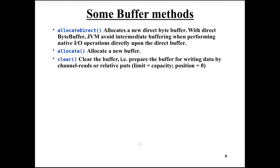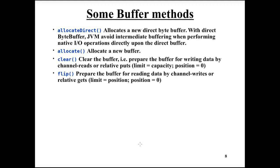The clear method empties the buffer. Say we have written data into the buffer, read all that data, and now want to write again. Clear sets limit to capacity — allowing all positions to be used — and sets position to zero, so we start writing at position zero. Flip prepares the buffer for reading after we have written.